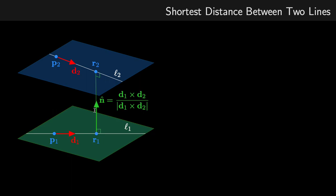I can form a normal vector for the plane that L1 lies on, which is perpendicular to L1. This is calculated by the cross product between the direction vectors D1 and D2, giving a normal vector perpendicular to both lines. I divide it by its magnitude to get a unit vector N-hat, and it's important that N is a unit vector.